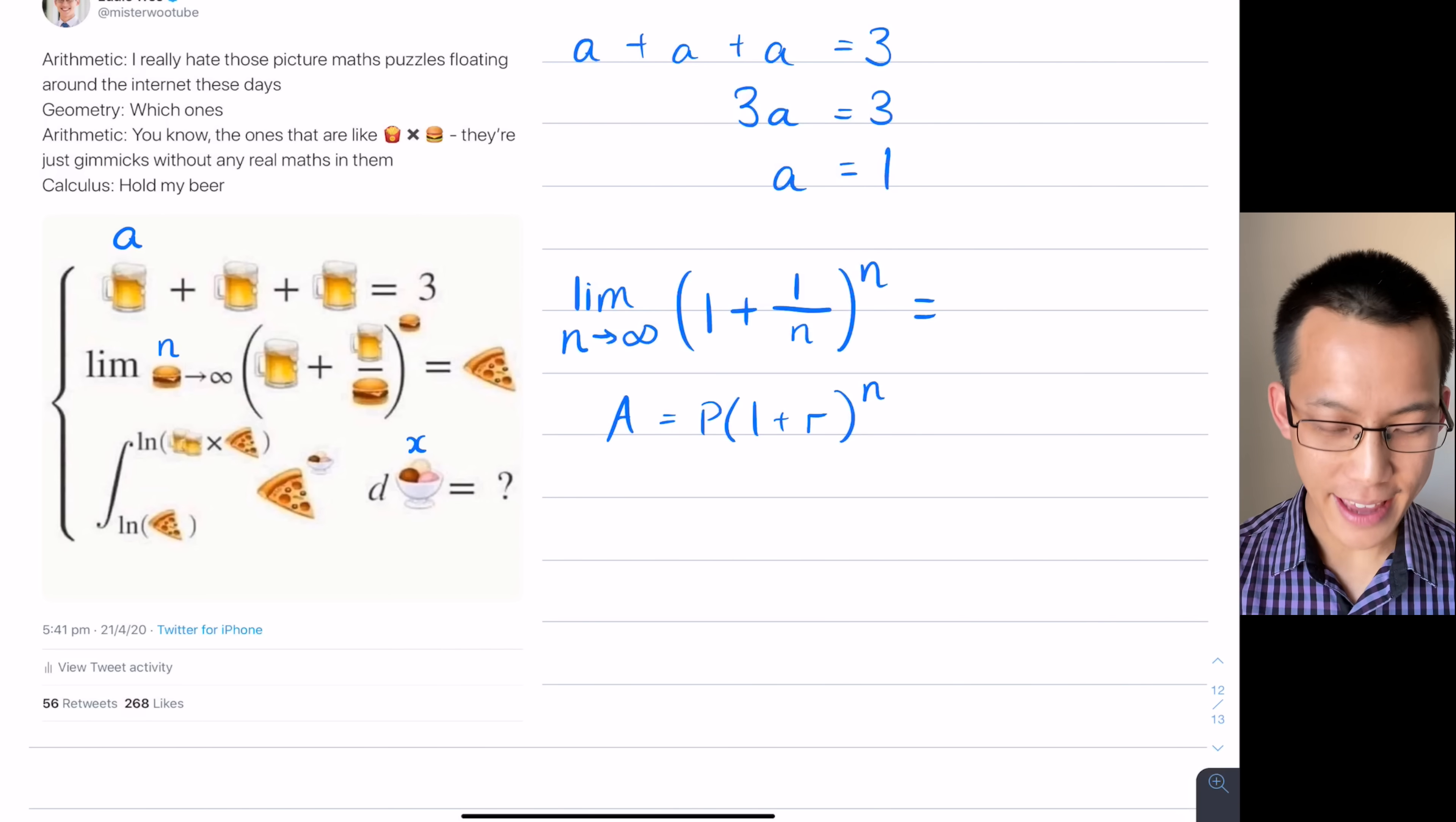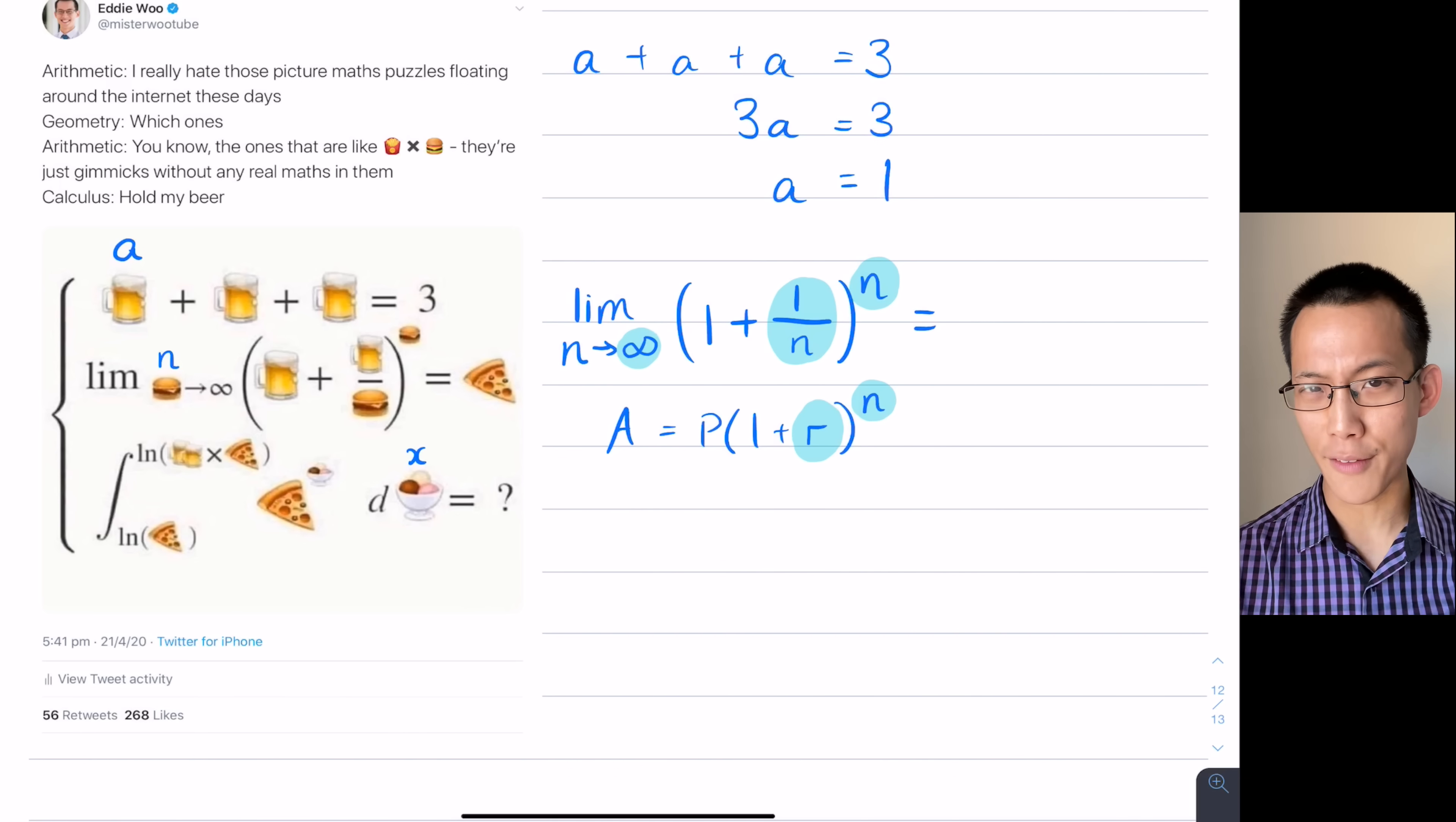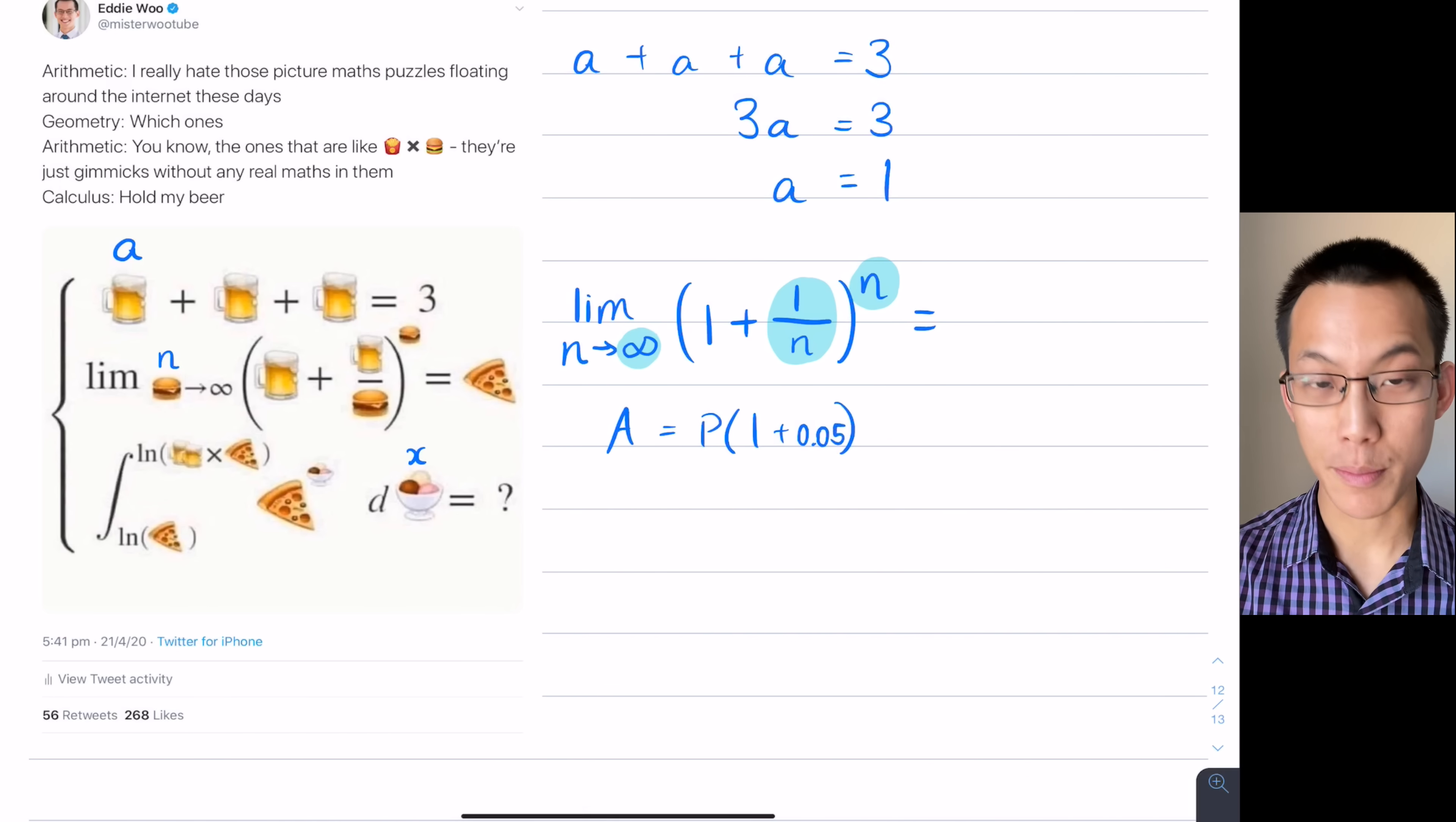When you take N as it goes to infinity, what you're essentially saying is this R here, which is like your interest rate, it's getting very, very small. It's approaching zero because one over a very, very large number is a very tiny number. So you're getting a very small amount of interest. But then what's happening is the index up here, N, that's going towards infinity. So even though you're getting a very tiny amount of interest, you're getting it a lot of times.